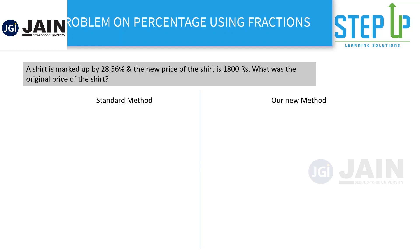Now I'll take an example of a word problem and show how you can save a lot of time in a typical exam question. I'll first show you the standard method and then our new method, so you understand the ease and how much time you can really save. With our method, this may take five seconds to answer; with the standard method, you may take one minute and still get the wrong answer.